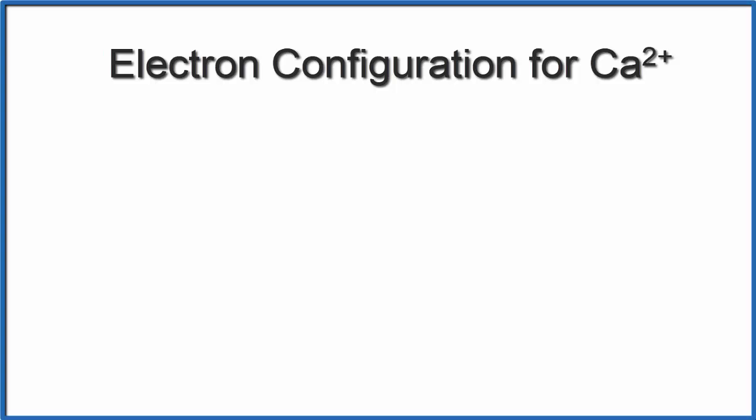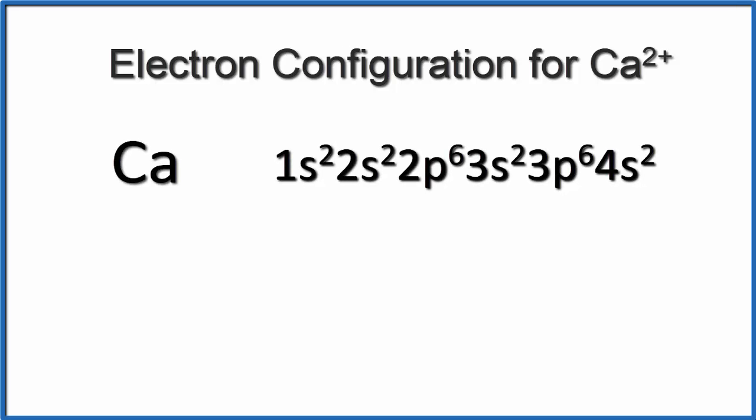In this video, we'll write the electron configuration for Ca2+, the calcium cation. Let's look first at neutral calcium as we find it on the periodic table.